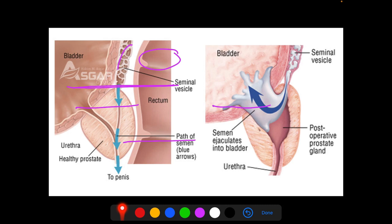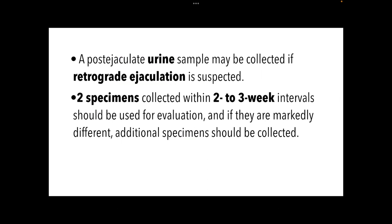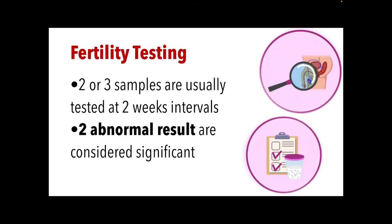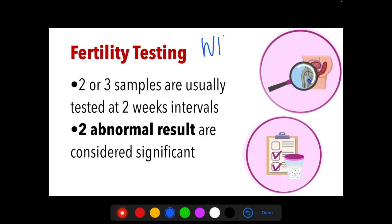For fertility testing, two or three samples are usually tested at two to three week intervals, and two abnormal results are already considered significant. According to WHO, two to three samples should be collected, not less than seven days or more than three weeks apart.